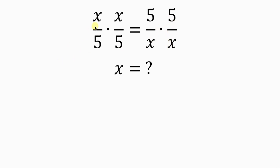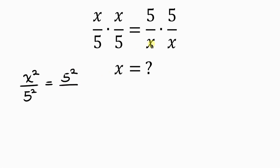Let's do it this way. x times x gives x squared, all over 5 times 5 gives 5 squared. And this is equal to, on the right-hand side, 5 times 5 gives 5 squared all over x times x gives x squared.